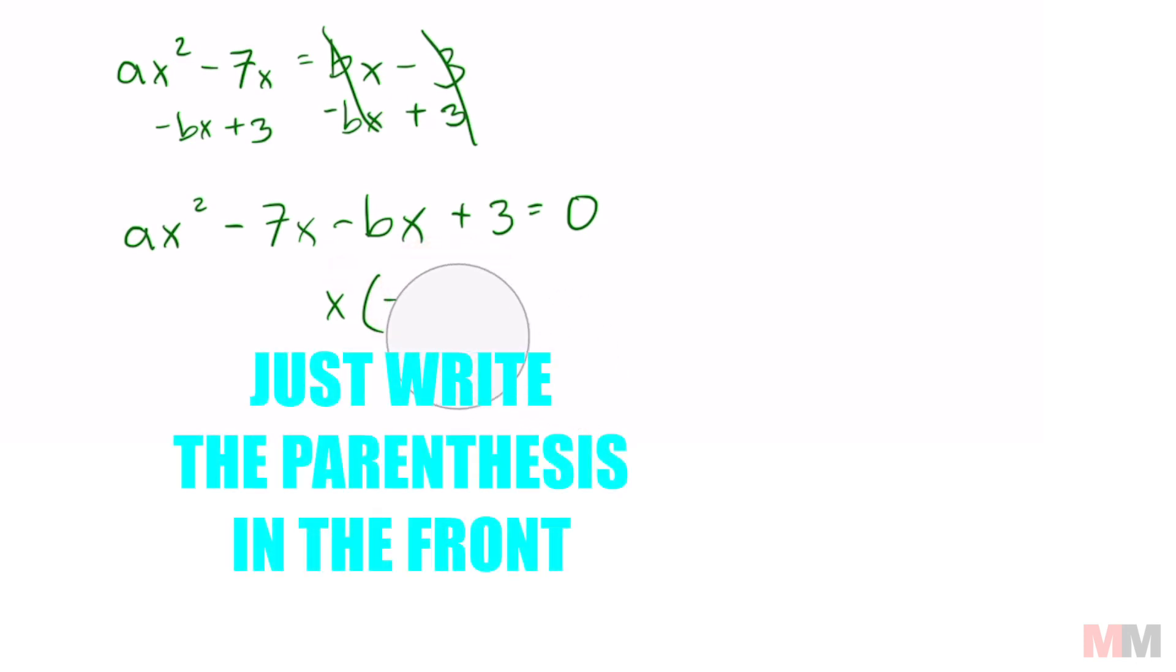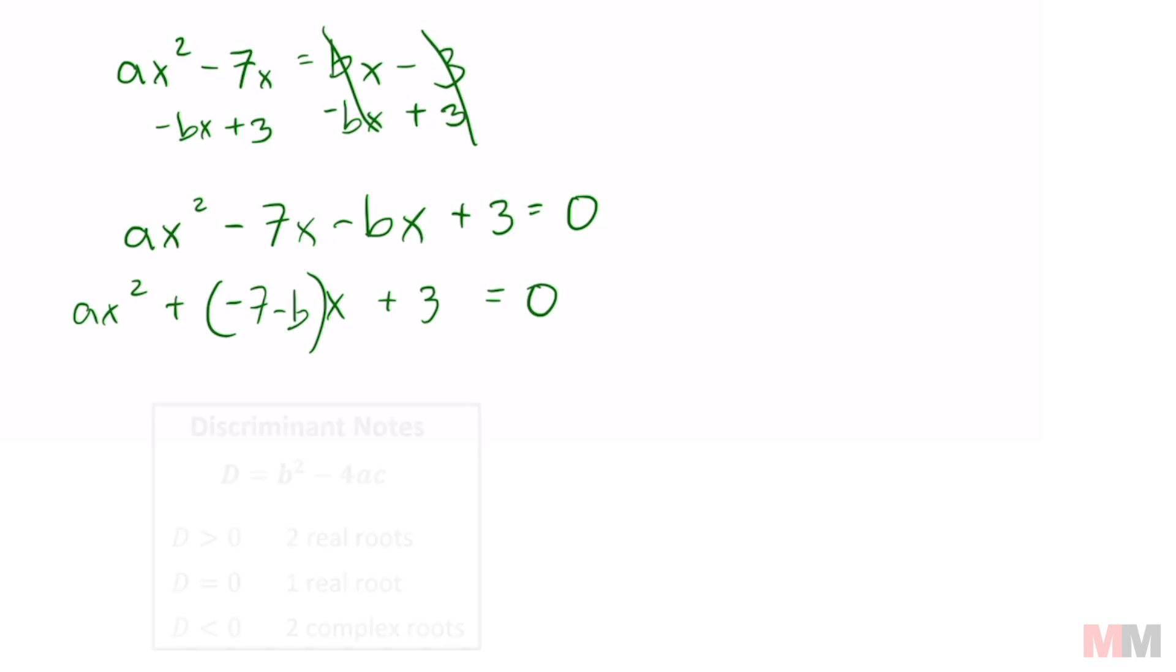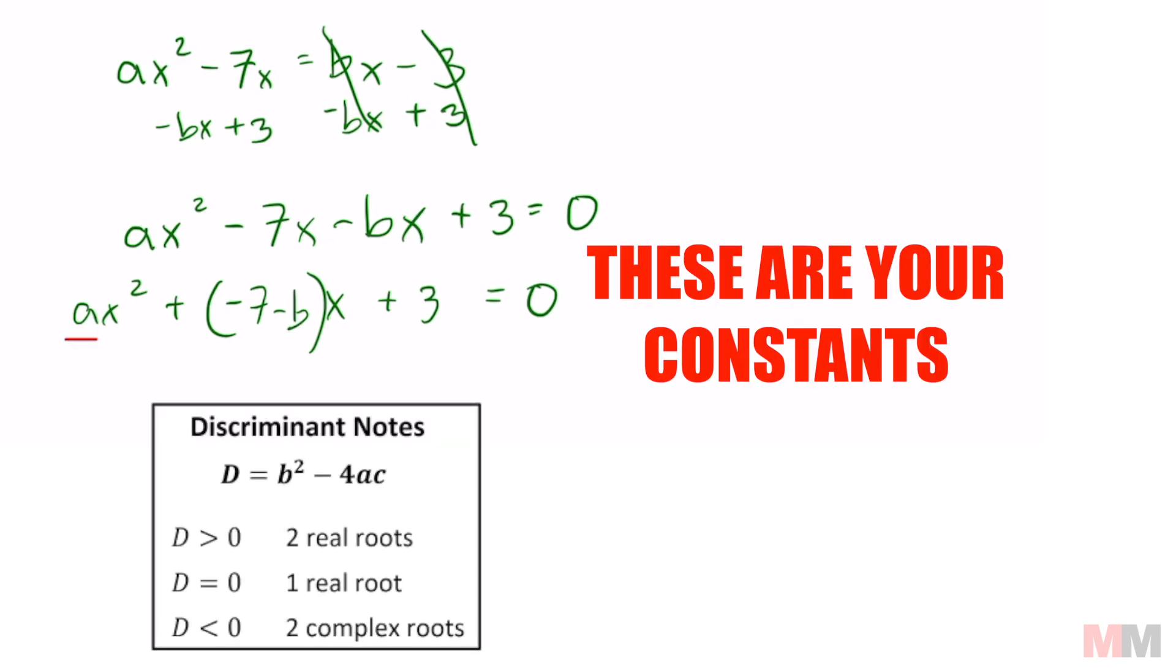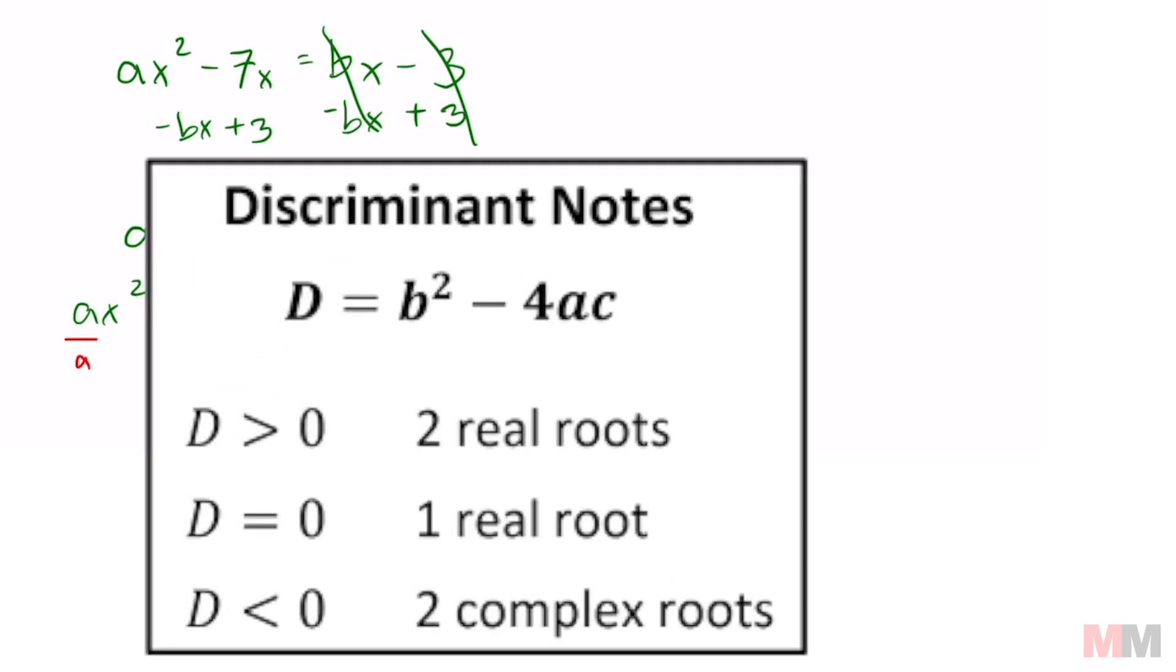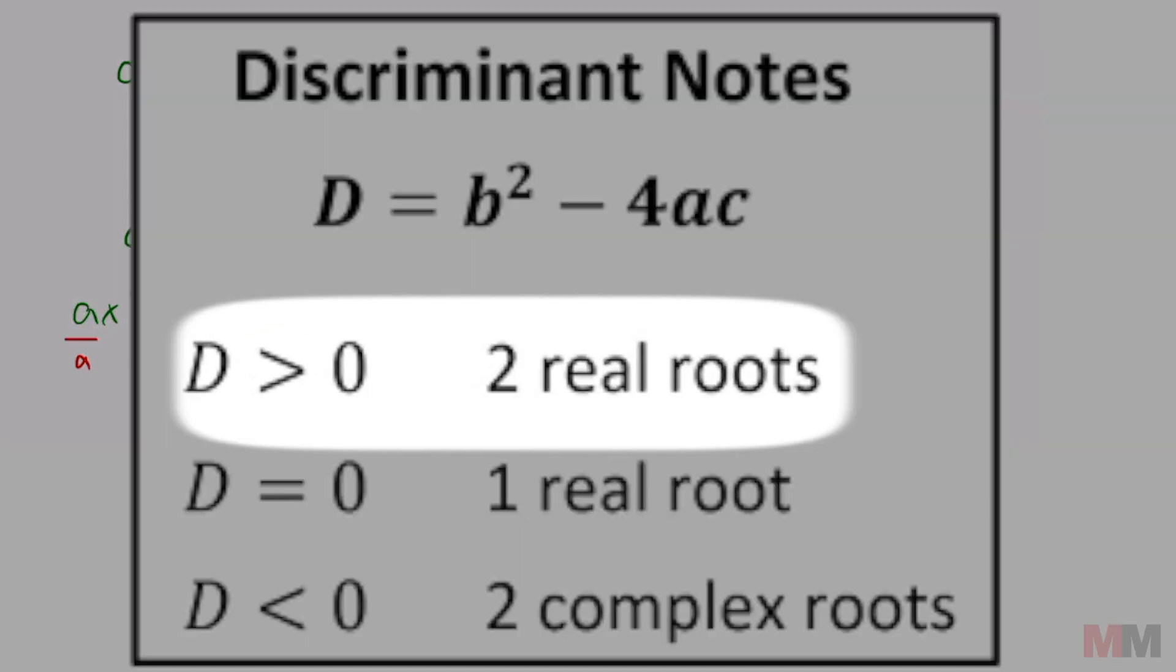And that is going to represent the constant for the letter x. We might as well write it like this. It means the same thing. Drop everything else down. And from here, we are ready to use that discriminant formula. In my discriminant formula, this is going to represent my a. This is going to represent my b. And this is going to represent my c. And for it to have two real solutions, then b squared minus 4ac has to be greater than 0.